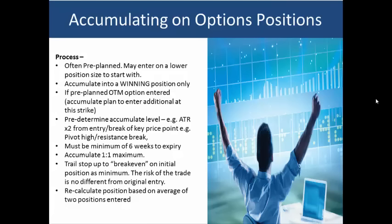Another rule we have in place is that we accumulate a one-for-one maximum. So if we have initially opened 20 contracts, then the maximum we can open is another 20 contracts. We may choose to enter 20 contracts first, then another 10, then another 10 if there are key price points on the way up. Every time we accumulate on the position, we trail the stop up to break-even on our initial position as a minimum.